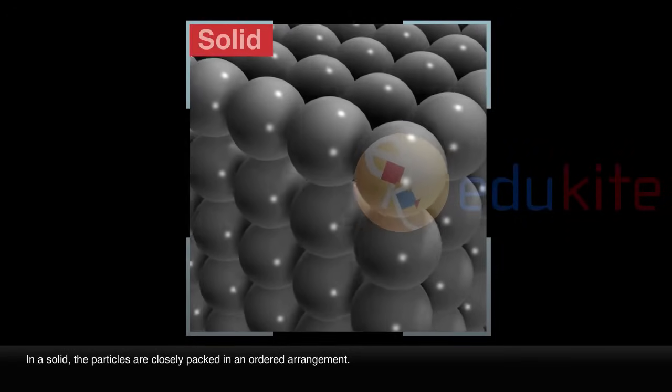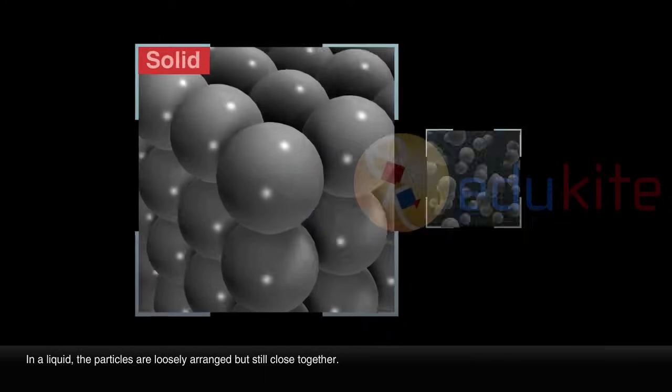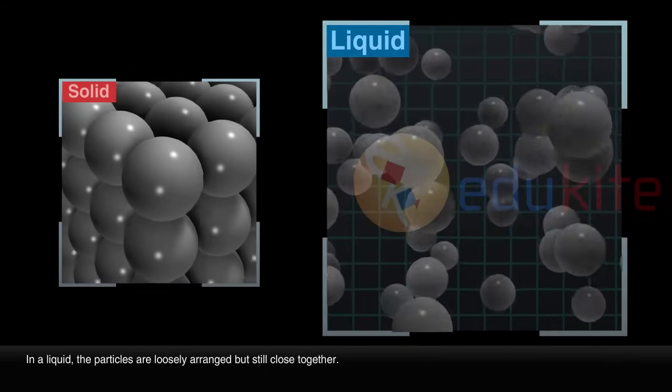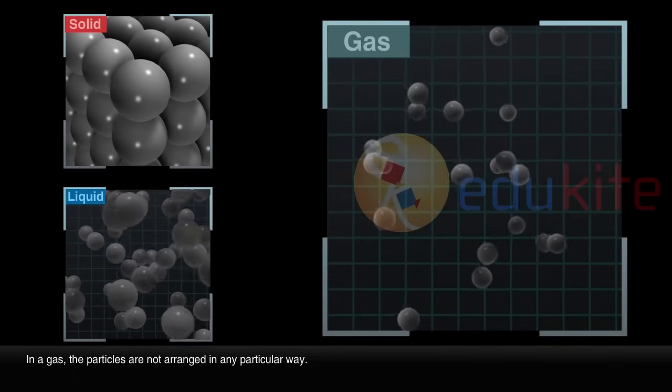In a solid, the particles are closely packed in an ordered arrangement. In a liquid, the particles are loosely arranged but still close together. In a gas, the particles are not arranged in any particular way.